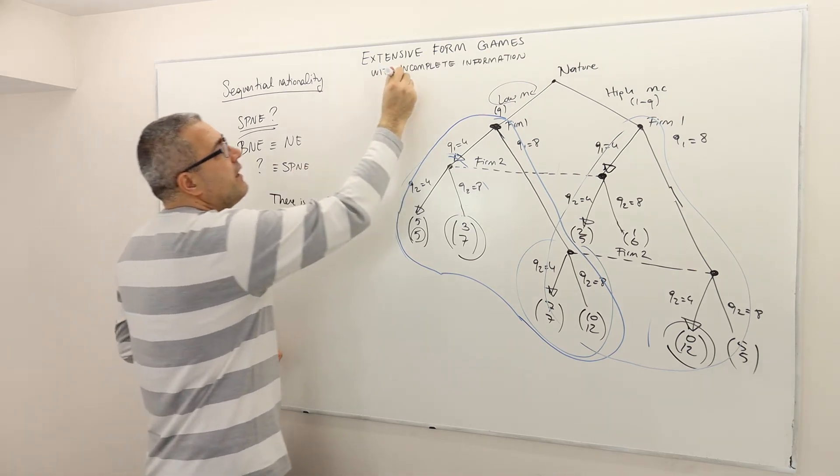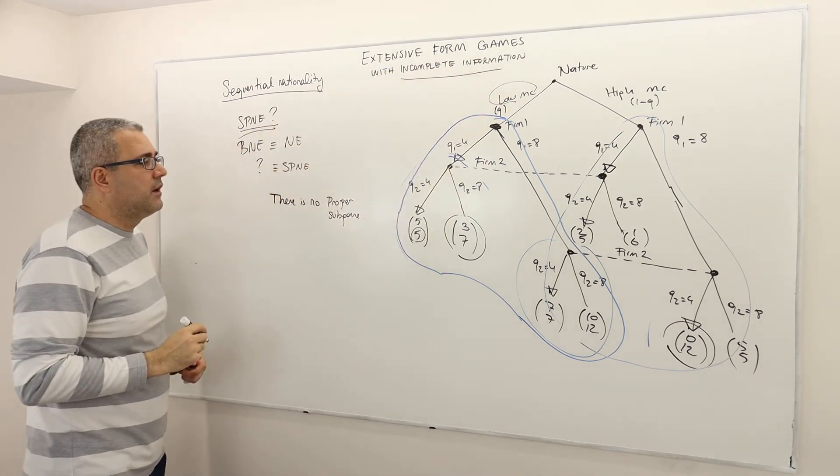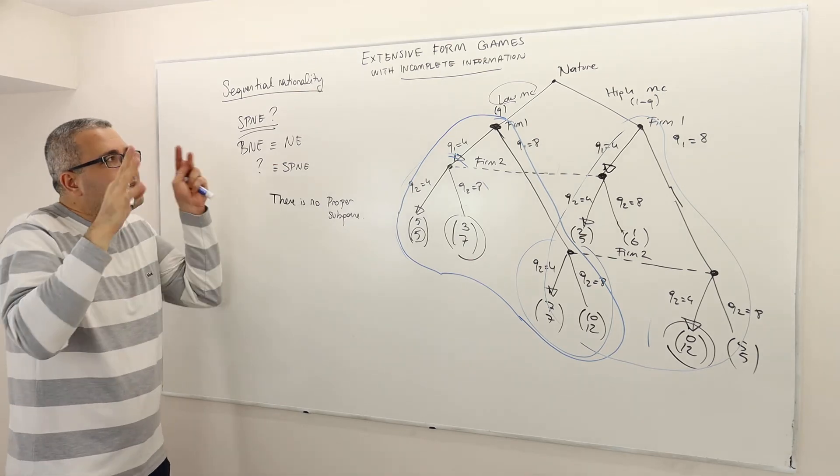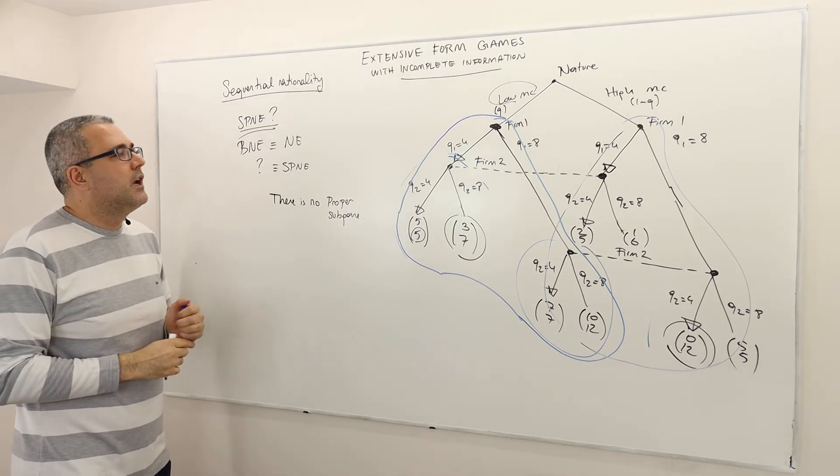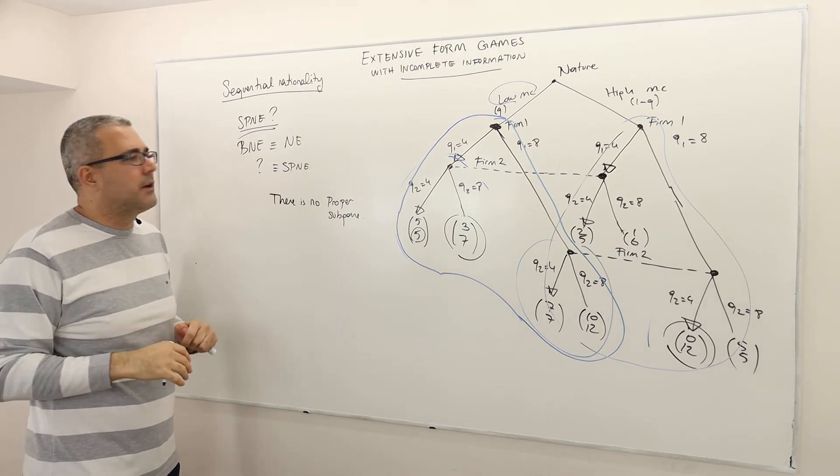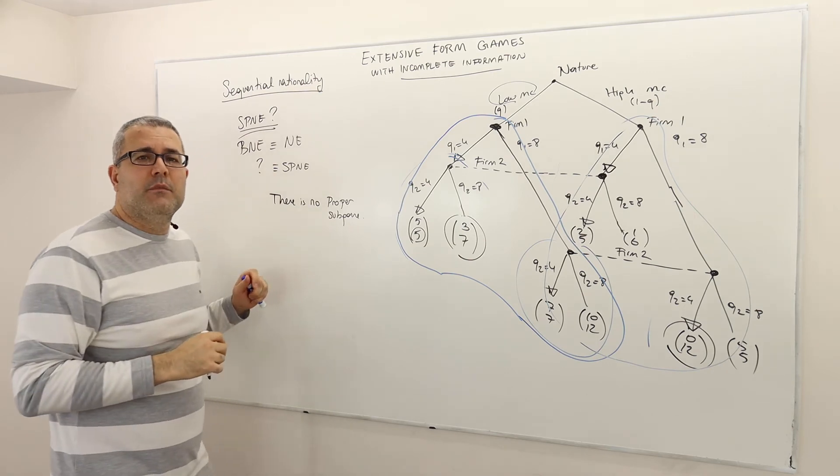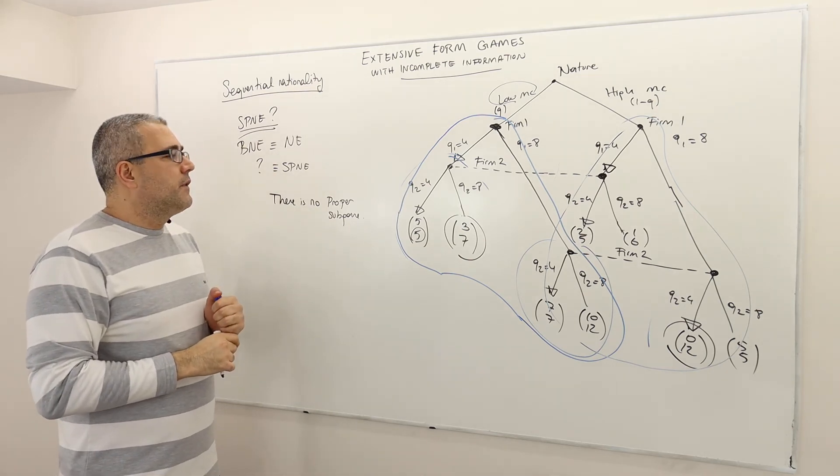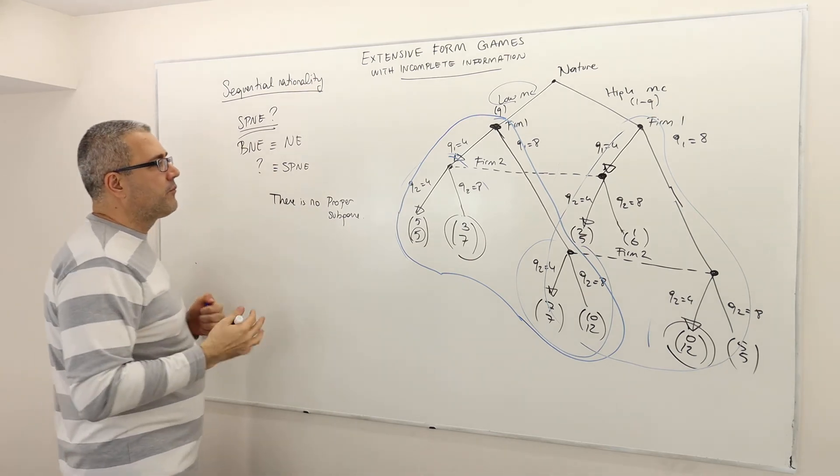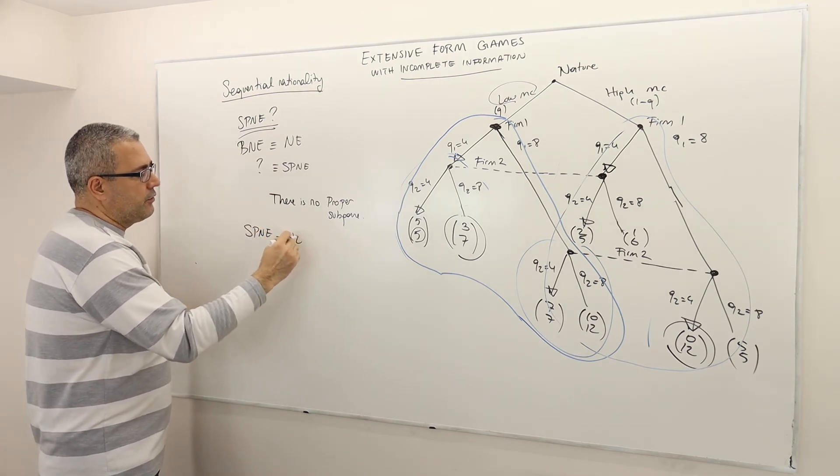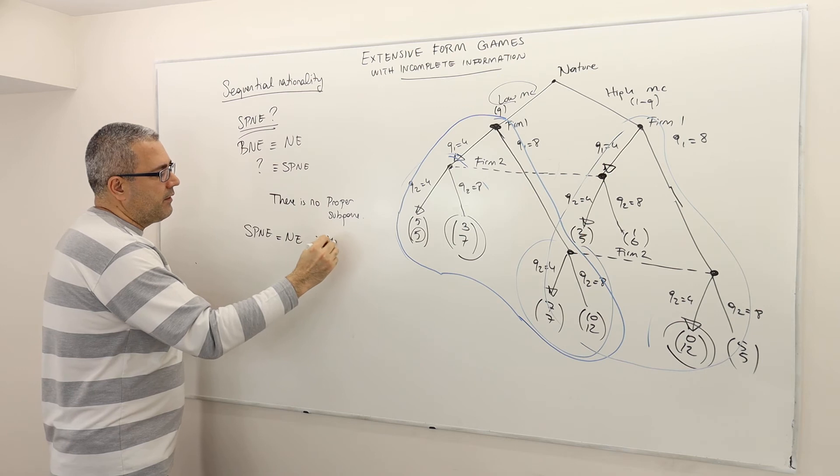In fact, whenever we have incomplete information games, we will almost never, I mean, in some interesting games, we may have some proper subgames, but most of the times we will never have a proper subgame. So what does that mean? That means SPNE and Nash equilibrium is the same thing.